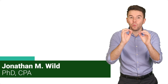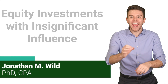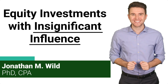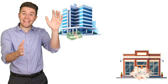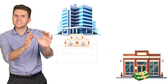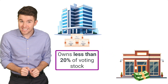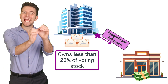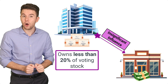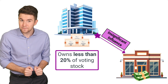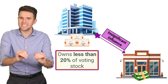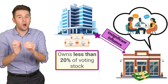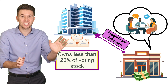Hi, I'm Jonathan Wild, and we are going to cover equity investments with insignificant influence. When a company invests in another company but owns less than 20% of its voting stock, we usually say the investing company has insignificant influence over the company it invests in. That is because with less than 20% ownership, we usually don't have control over another company's strategic decisions.